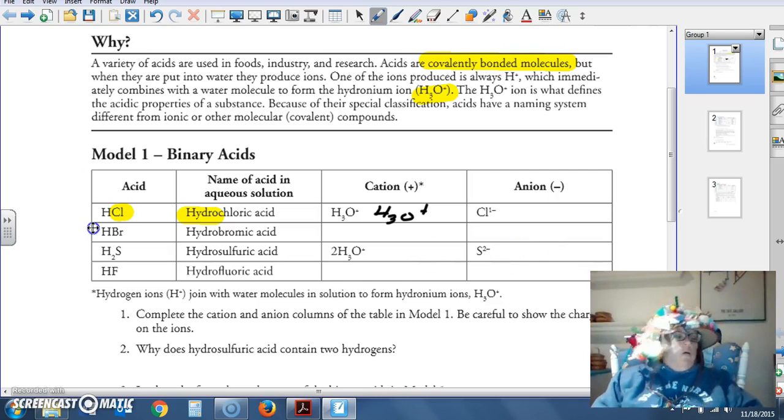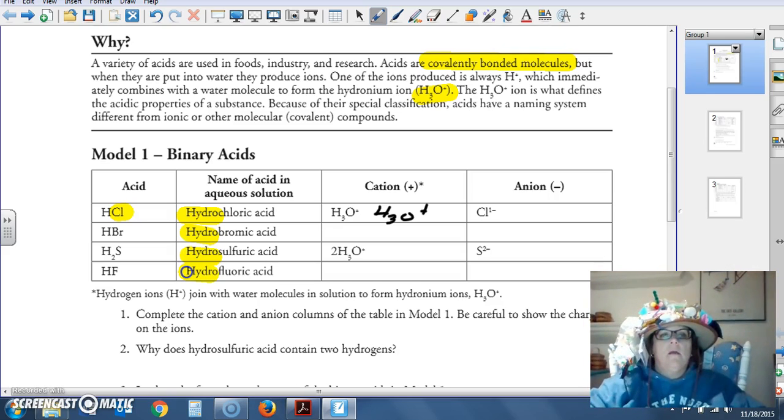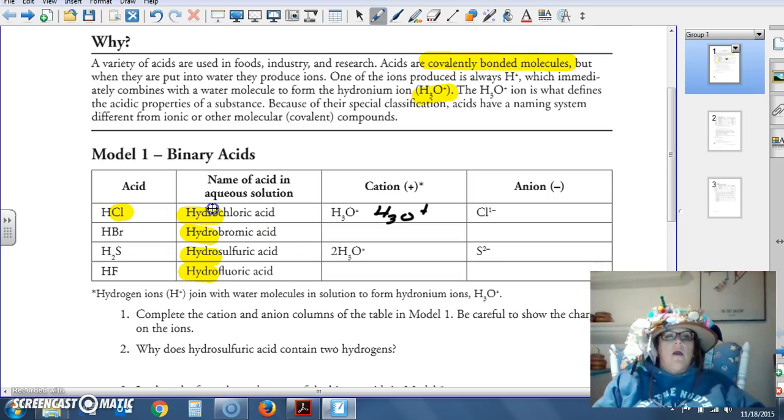The second one is named hydrobromic acid. We have a hydro in the beginning again. The next one is hydrosulfuric and hydrofluoric. The cation for hydrobromic, again, H3O plus. The anion, Br negative. The cation for hydrofluoric, H3O plus, and anion, F negative.